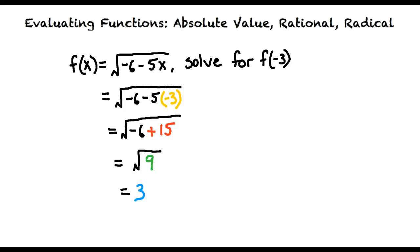Since 9 is a perfect square, it can be simplified to 3. So the answer for square root of negative 6 minus 5 times negative 3 is 3.